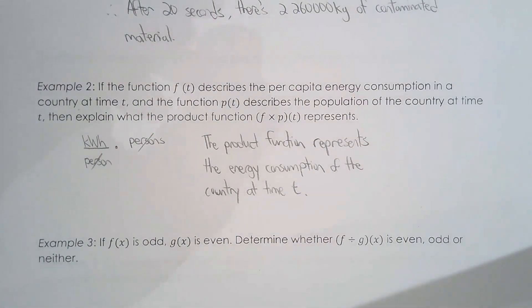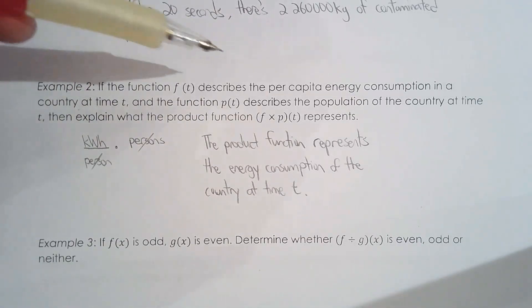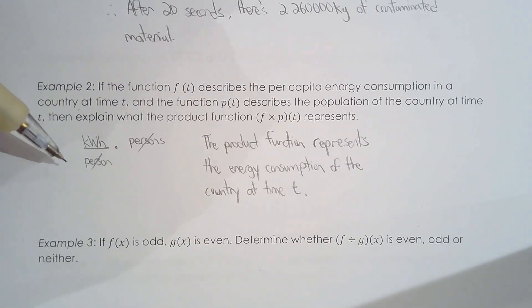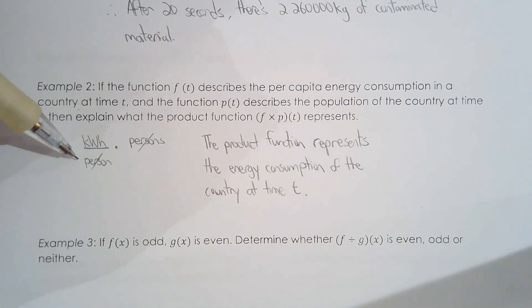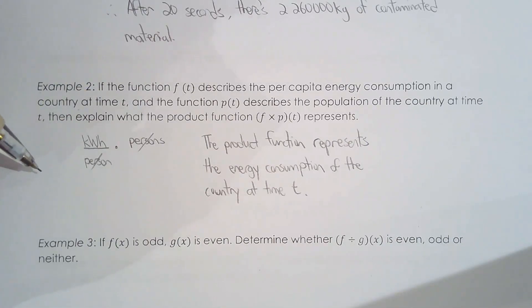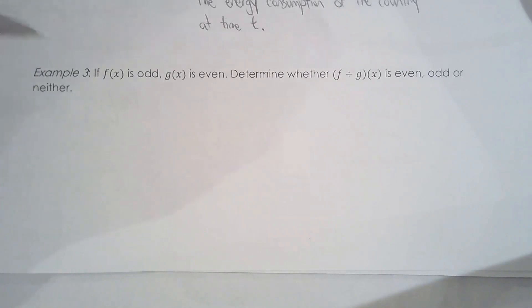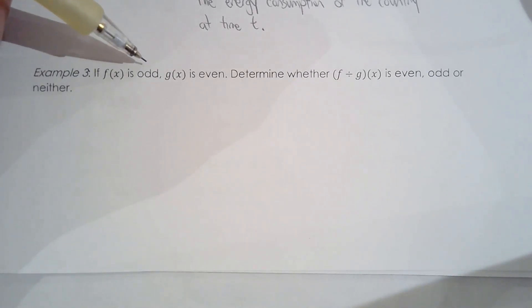To understand why, imagine a country where the per capita energy consumption is one kilowatt hour per person, and there are 100 people. So one kilowatt hour per person times 100 people means the country is consuming 100 kilowatt hours at that given moment.